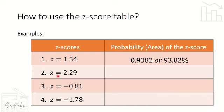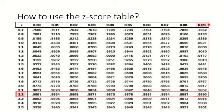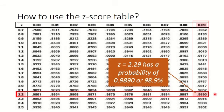Example 2: We have z = 2.29. Go back to your z-score table, find 2.2 in the left column, then intersect it with 0.09. The intersection of 2.2 and 0.09 gives 0.9890. Therefore, the probability for z = 2.29 is 0.9890, or 98.90%.